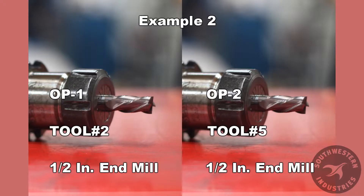In example 2, we created a master program by combining two programs for Operation 1 and Operation 2. Tool number 2 in the Operation 1 program is a half-inch end mill, and the same half-inch end mill in the Operation 2 program is labeled tool number 5. Here we have a choice: leave the tooling numbers the way they are and we have two half-inch end mills in the machine, or we can change the half-inch end mill in Operation 2 from tool number 5 to tool number 2, giving us the same tool number for the half-inch end mill in both programs.